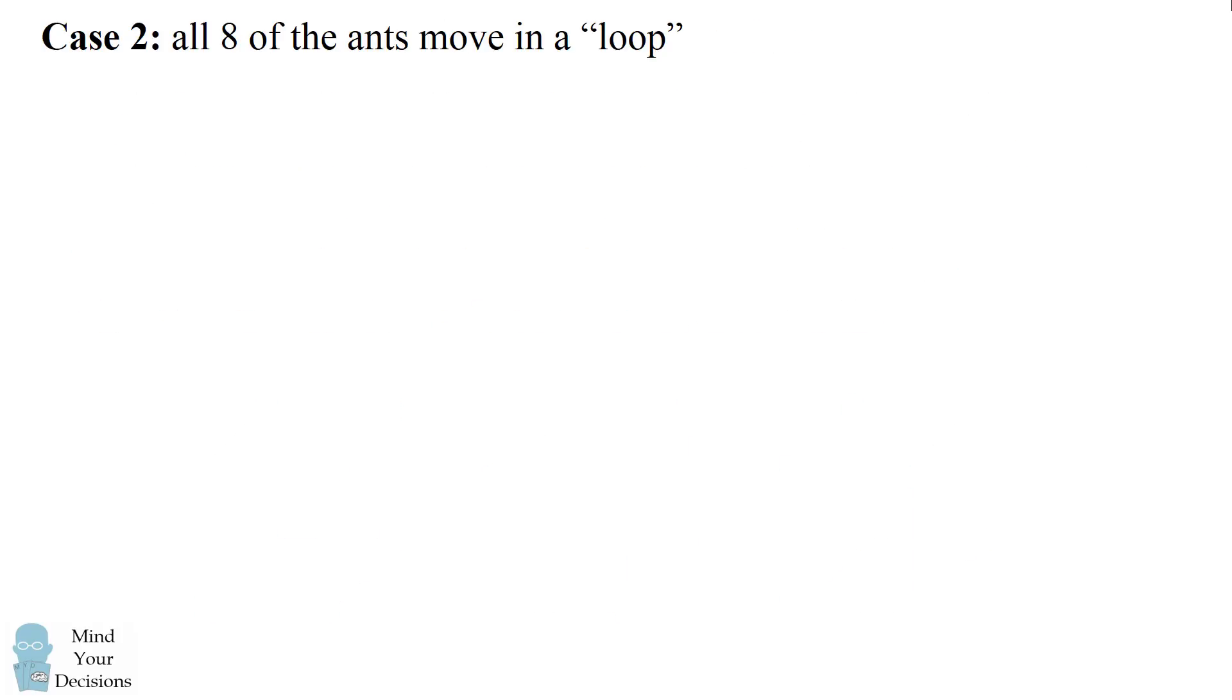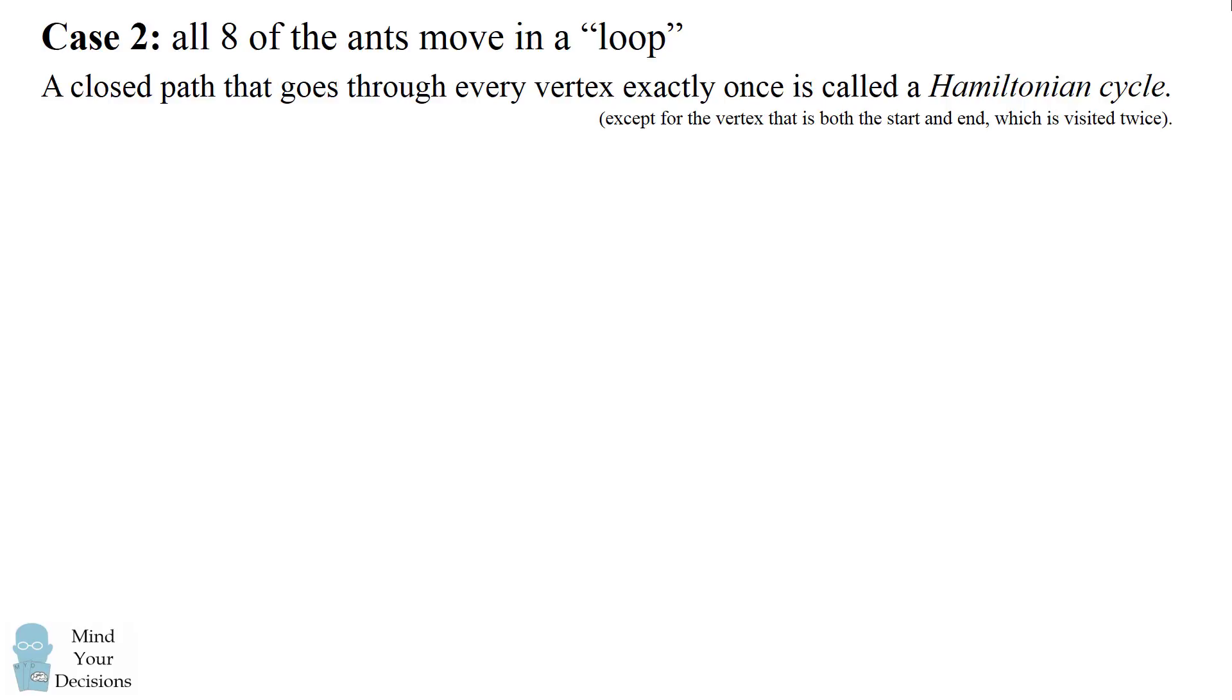There's another way that the ants could not collide which is that all eight of the ants can move in a loop. A closed path that goes through every vertex exactly once is called a Hamiltonian cycle. Now to preempt a comment, it will go through every vertex exactly once except for the vertex that's both at the start and the end which is visited twice. So with that caveat we have the definition of a Hamiltonian cycle.